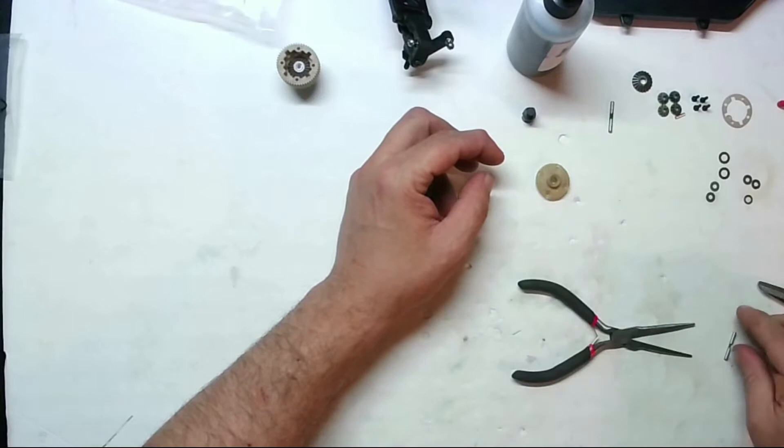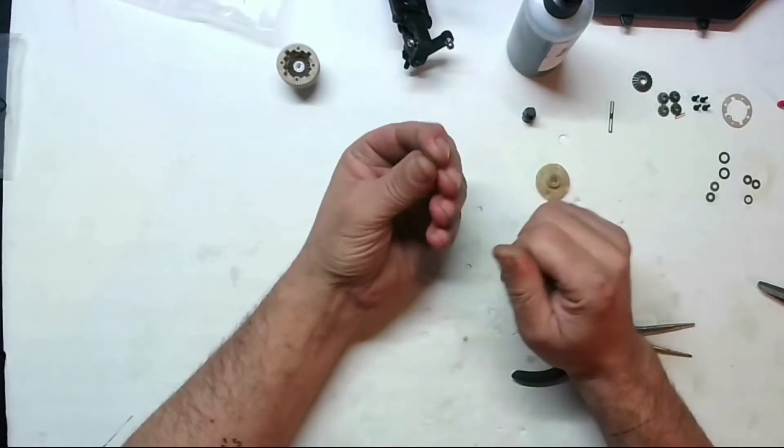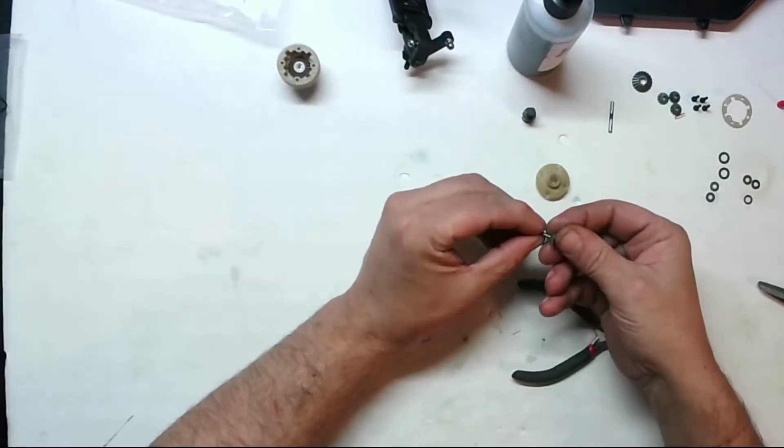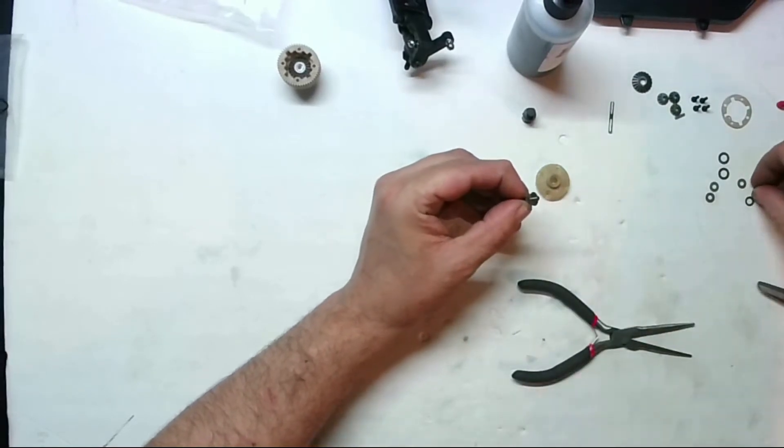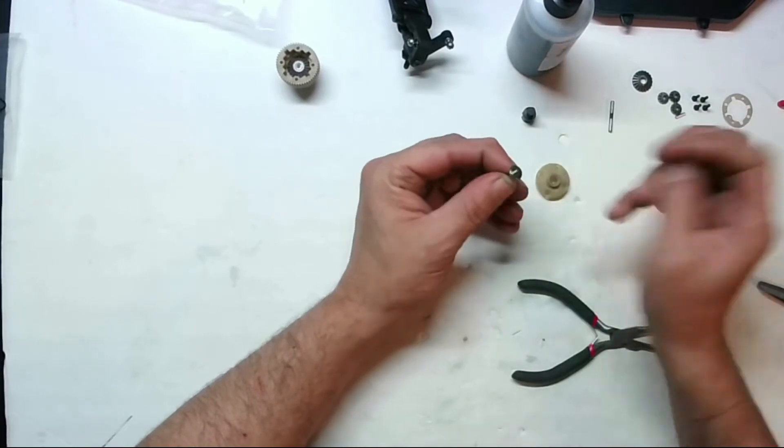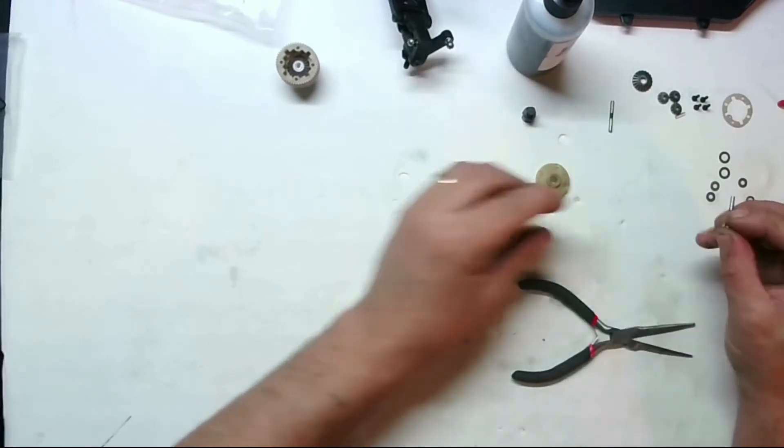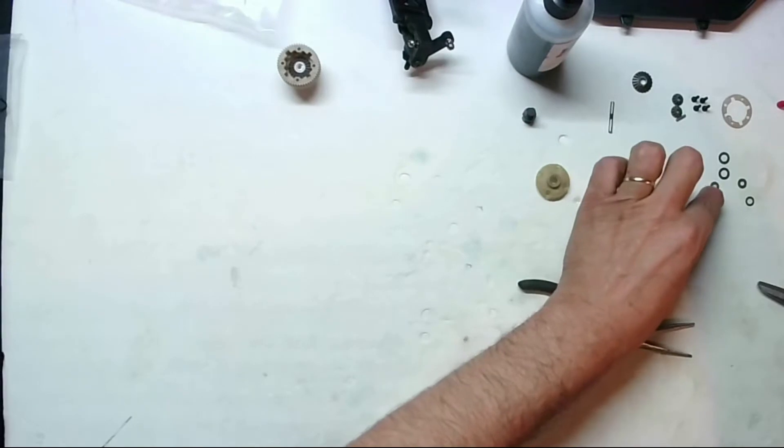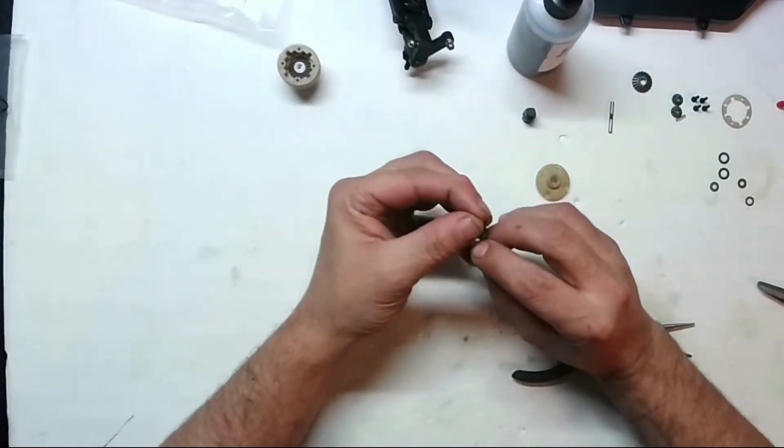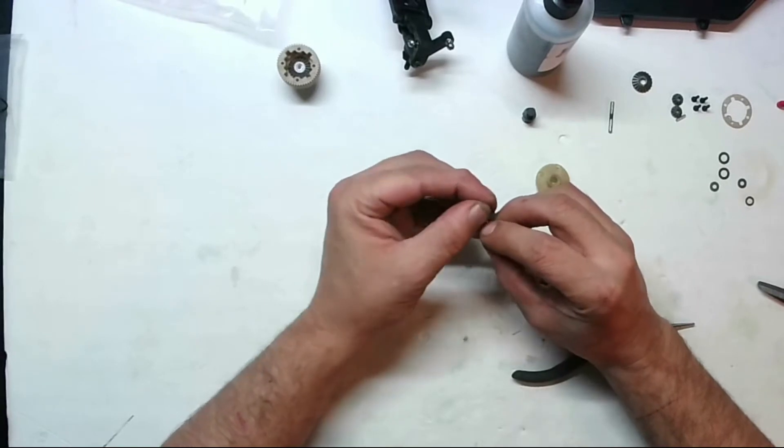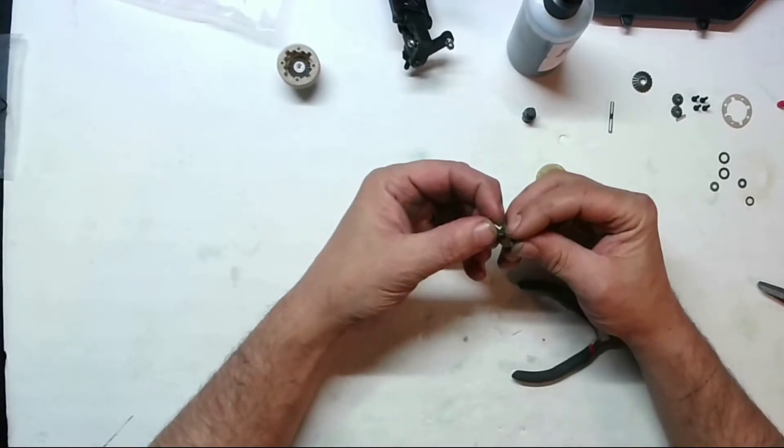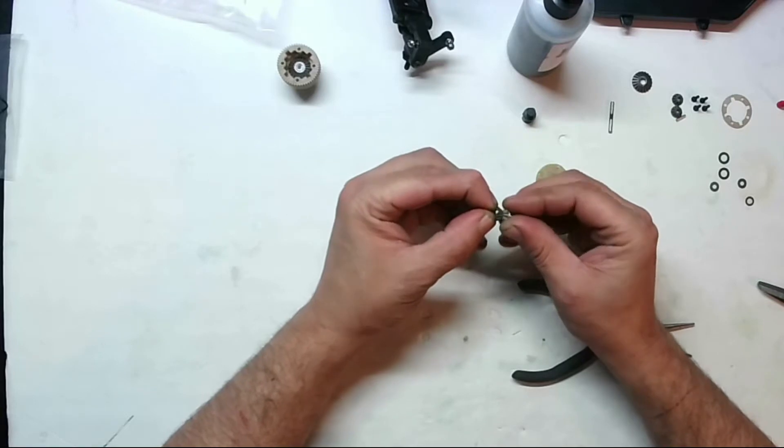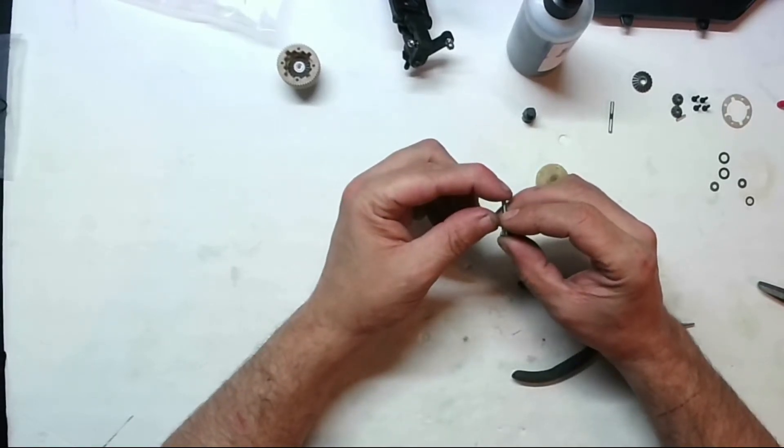Back to the top view here. So that's clicked on there. I'm gonna just set that aside for a minute. Grab these shafts. Now the looks of it with all these washers here, we're gonna have shims.